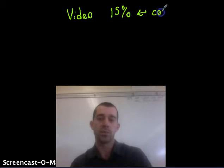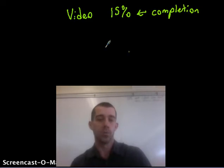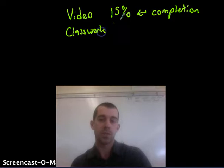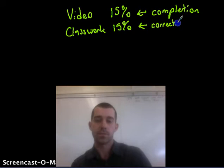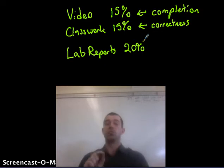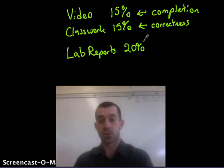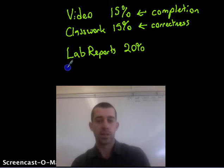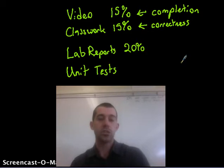Another 15% is your class work. When you're in class, I expect your work to be correct, so this is graded on correctness, not just completion. Lab reports are worth about 20% of your grade. The first lab report you'll do with sample data from my website as your summer assignment, so the first day of school you'll be turning in your first lab report. Unit tests altogether are worth 50% of your grade.